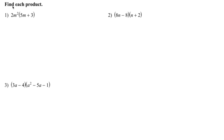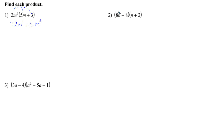We're going to review for our quiz. It starts with some multiplying questions. We're using the distributive property: 2m squared times 5m is 10m cubed, and 2m squared times positive 3 is 6m squared. That's a nice simple one.